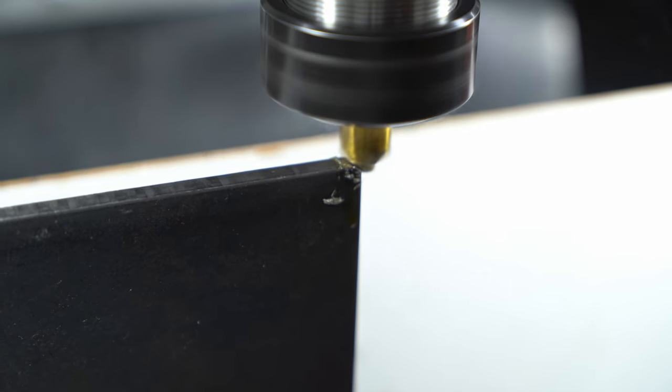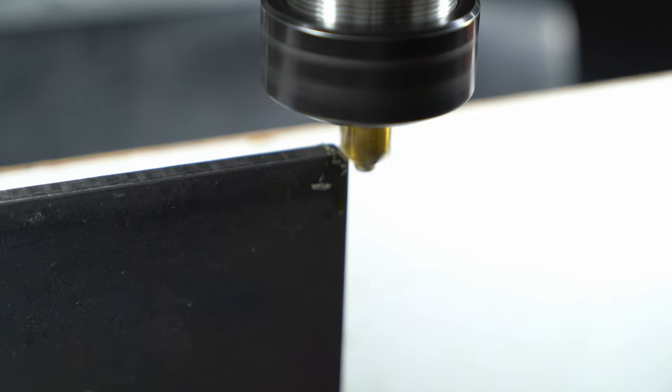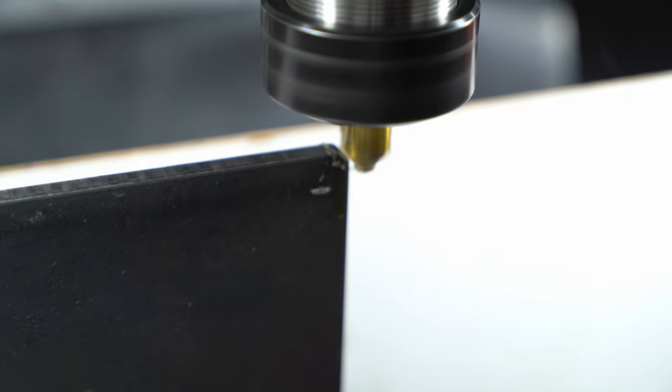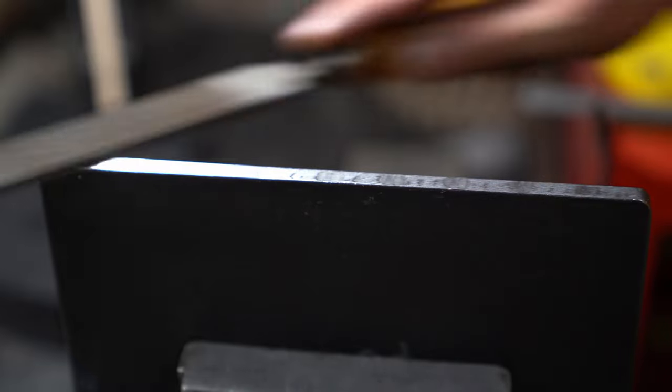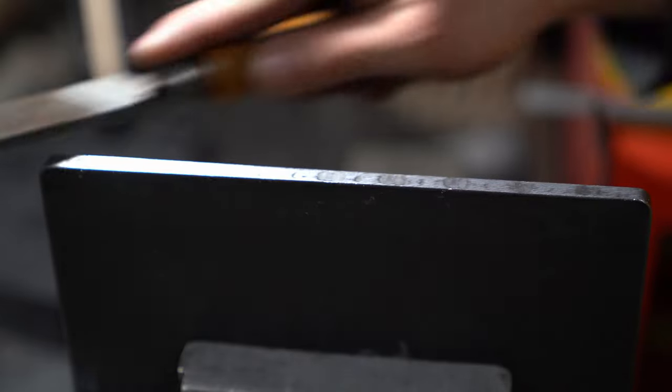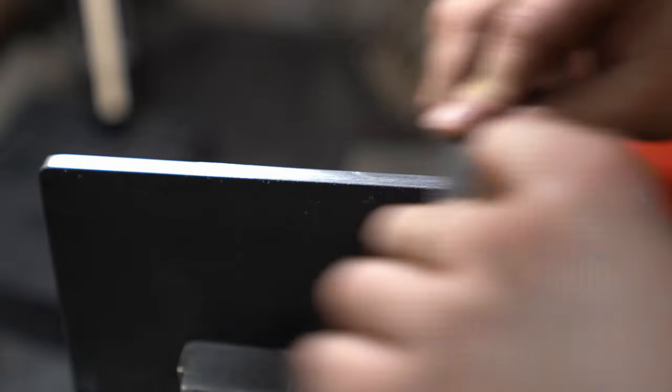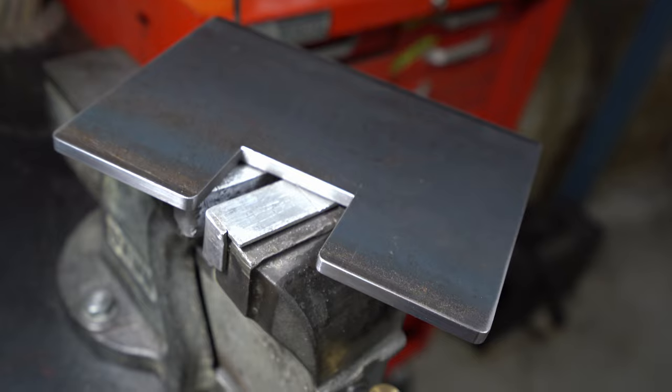Just to give us a nice surface. This will get chewed up by the belt but, you know, it might as well be nice on day one. Rounding over again. Dressing some of these edges with a hand file. I don't need to do this but I like doing it so I'm going to. And that came out quite nicely.